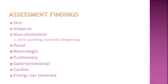Renal involvement can include acute or chronic renal failure or acute nephritic disease. Neurologically, patients may have a history of seizures or psychosis, and may be suffering with behavioral changes, depressive symptoms, and other CNS changes. Pulmonary findings include pleurisy, high risk for pleural effusions, pulmonary hypertension, and interstitial lung disease.